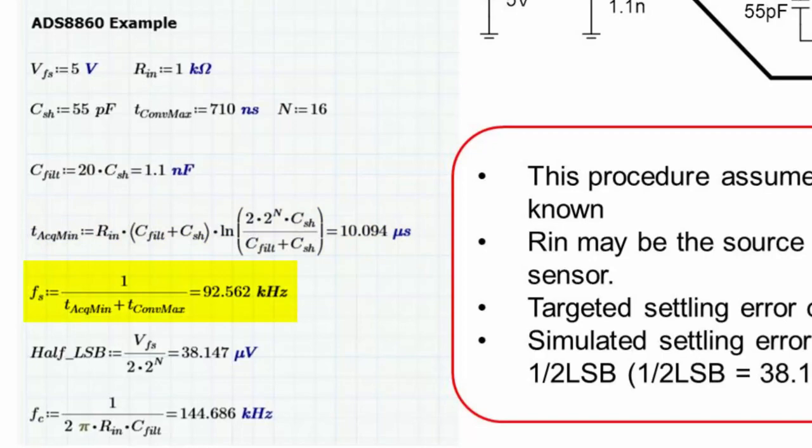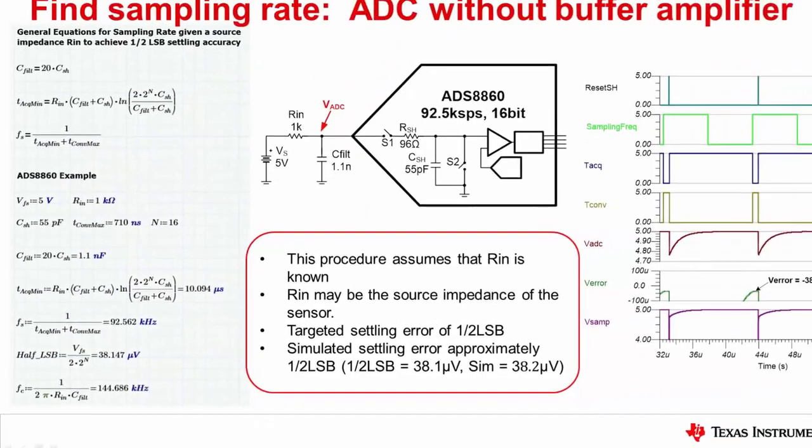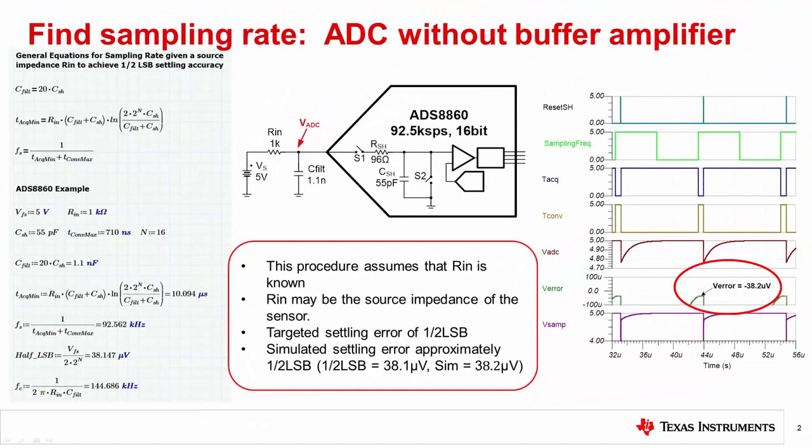This is used with the conversion period to find the sampling rate. Running a simulation on this circuit shows the settling error to be 38.2 microvolts, which is very close to half an LSB. Of course, the same results could be determined using the parametric search method described in the previous videos, but this method is much simpler.